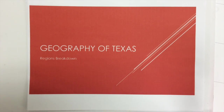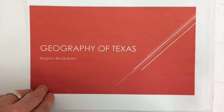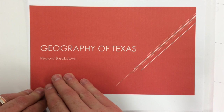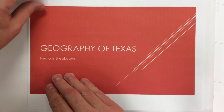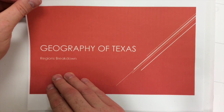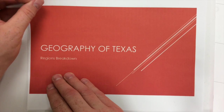So today, our first lesson is going to be on geography of Texas and the different geography regions of Texas and their characteristics. Each one, we're going to look at the physical and the human characteristics of the region.